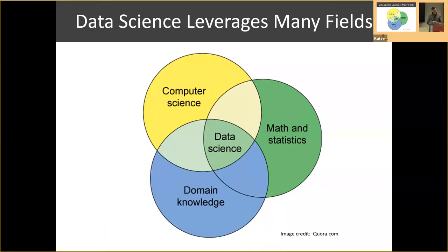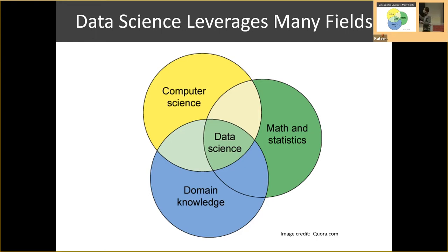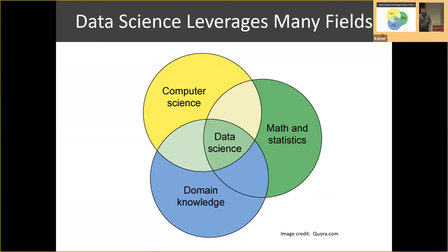What are the key components of doing data science? There's a pretty common Venn diagram to try to explain it — there are probably 20 others, and there's no one consistent definition of what data science is or what skills you need. Part of data science is you need some computer science skills, such as programming in R or Python and understanding how algorithms work. You need some math and statistics — you have to understand probability because your model is never going to be 100% correct. And you need some domain knowledge, because if you just have computer science and math skills but can't apply them, you'll likely create insight that's either obvious or not useful.